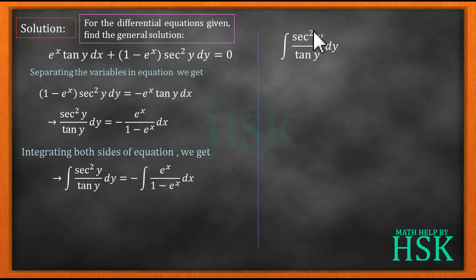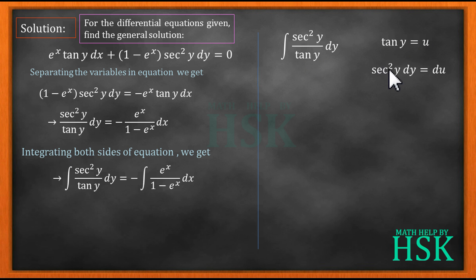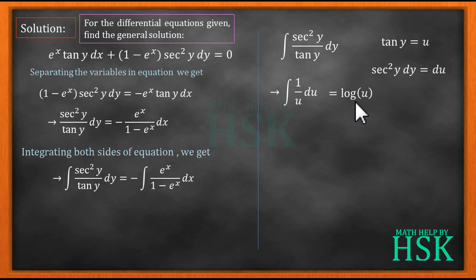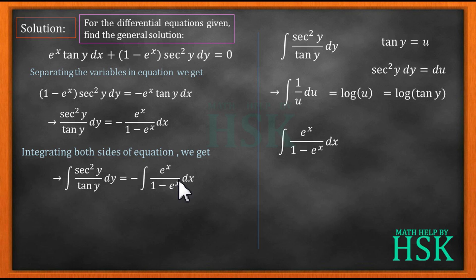Taking the first integral ∫ sec²(y) / tan(y) dy: the differentiation of tan(y) is sec²(y), so I substitute tan(y) = u, giving sec²(y) dy = du. The integral becomes ∫ 1/u du, which equals log|u|, or log|tan(y)|.